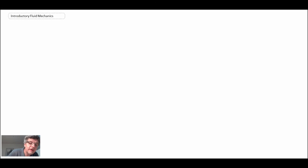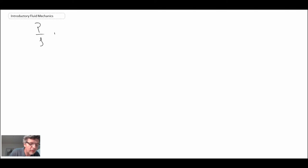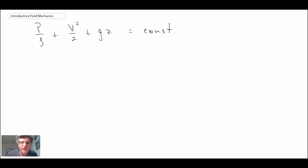Looking at Bernoulli's equation — P over rho plus V squared over 2 plus GZ equals a constant — what it provides is a relationship between what happens when you change velocity and pressure.